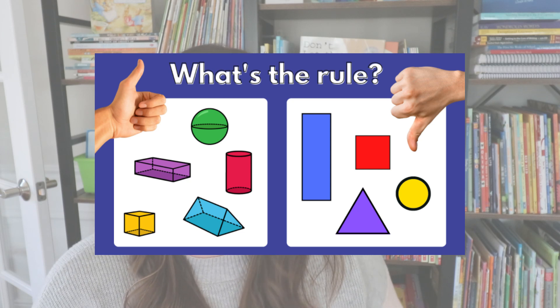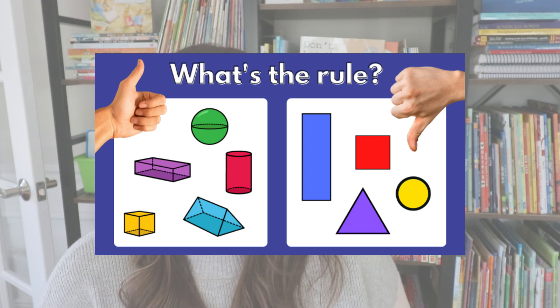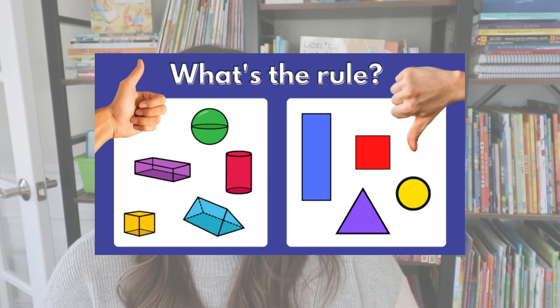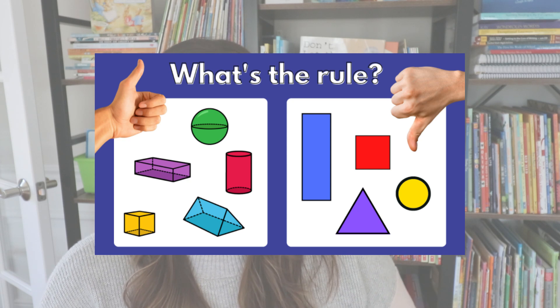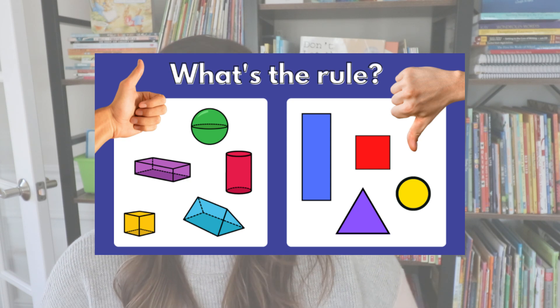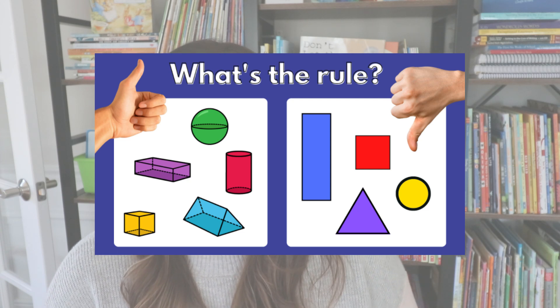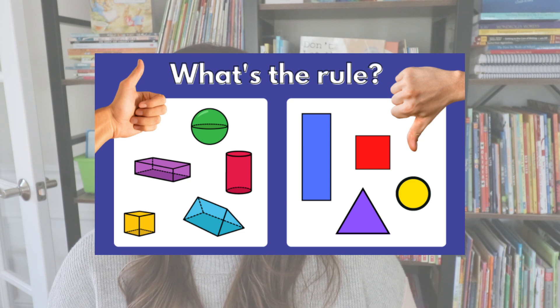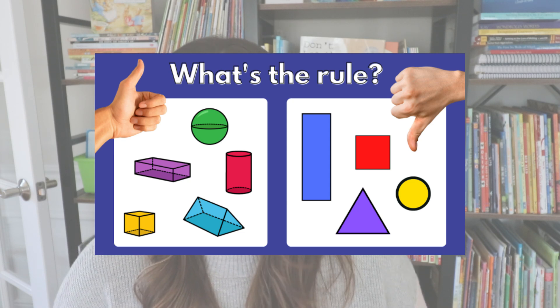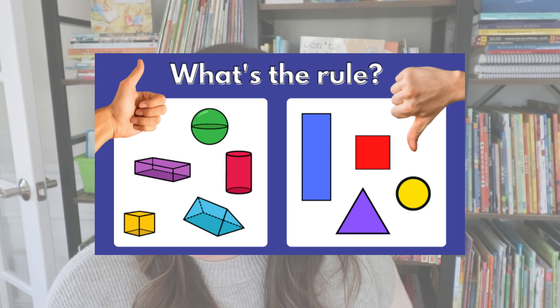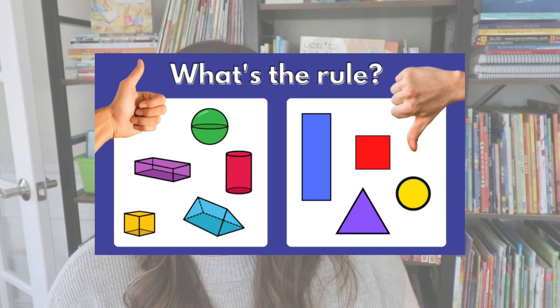I've done this with kindergarten classrooms and with my own son when he was in kindergarten. When I asked him what is the same about all the shapes on the thumbs up side, he didn't say 'they're all 3D' — he didn't know that terminology yet. Instead he said, 'all the ones on this side have those dotted lines' and 'all the ones on this side look see-through.' He told me none of the ones on the thumbs down side have those dotted lines or look see-through.